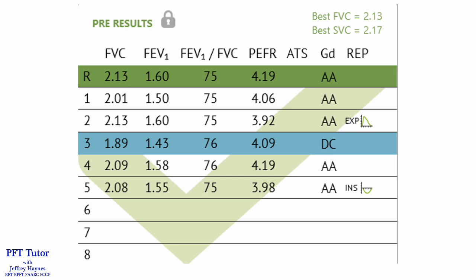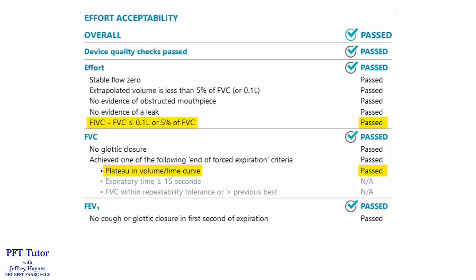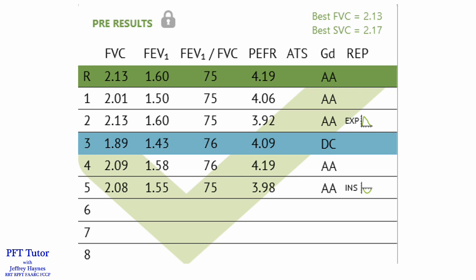The telltale pattern for a submaximal inhalation error when the flow volume loop looks normal is when data are symmetrically lower. So if you look at effort 3 as compared to 1, 2, 4, and 5, you can see that both the forced vital capacity and the FEV1 are symmetrically lower than the others. And this effort was graded as acceptable by the software because there was no evidence that there was a difference between the inspiratory vital capacity and the expiratory vital capacity. And as far as the FVC goes, they reached a plateau, so they exhaled fully. You can also see that the peak flow for effort number 3 is adequate and similar to the others. So if they blew out fast enough and they blew out long enough, but all of the data are symmetrically lower, that usually means that they didn't inhale fully and that's the submaximal inhalation error.